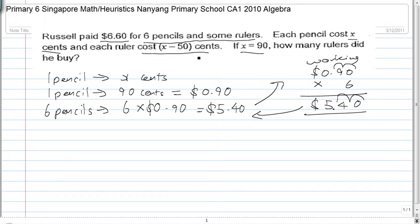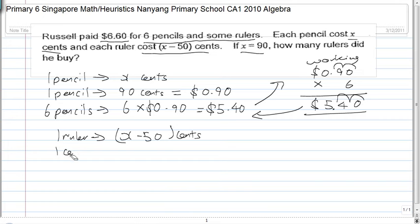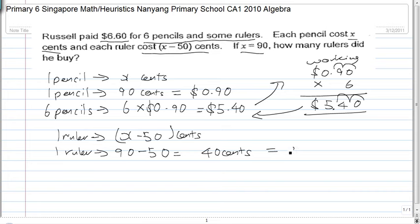How many rulers did he buy? One ruler cost X minus 50 cents. Since X equals 90, one ruler must be 90 minus 50 which is 40 cents, and that equals $0.40. Now since we are working in terms of dollars, let's convert everything to dollars.